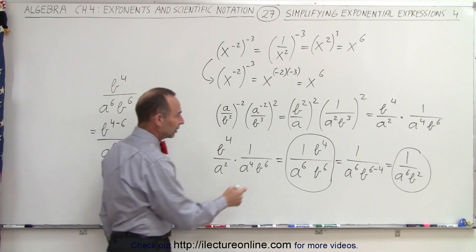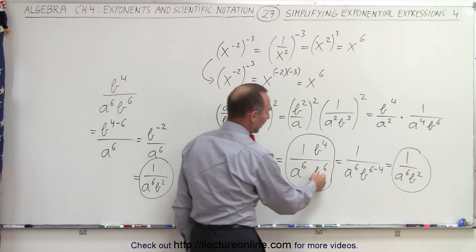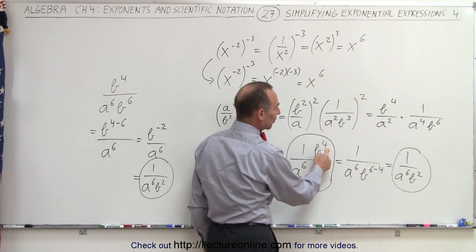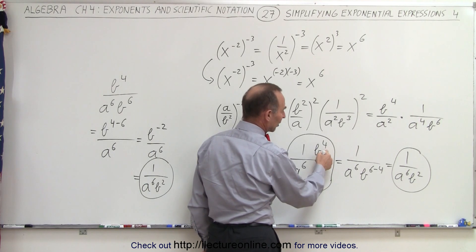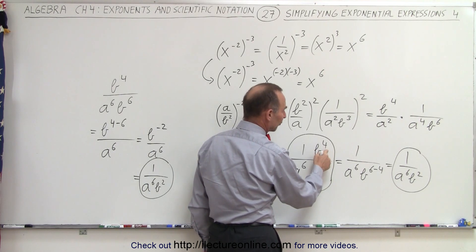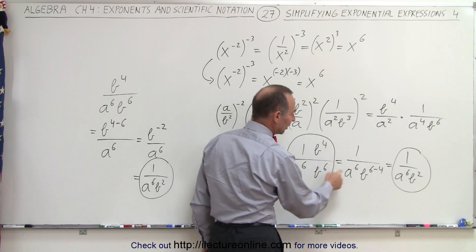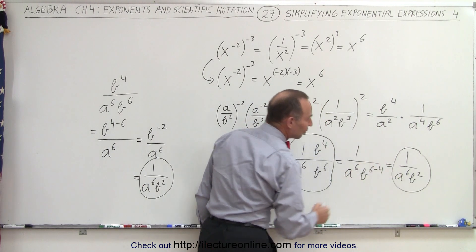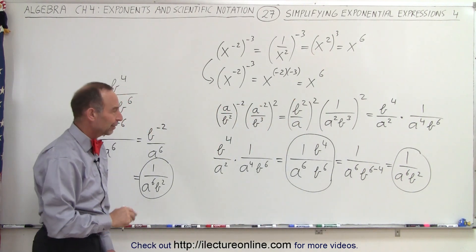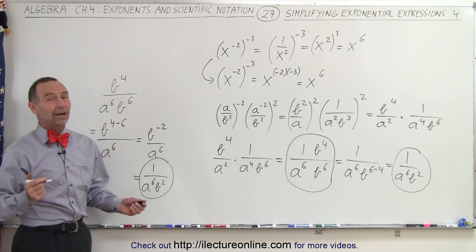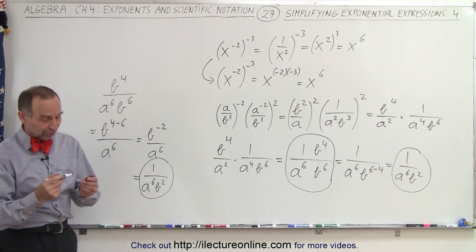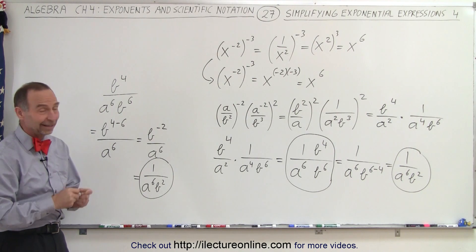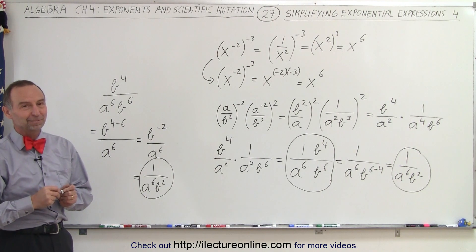So sometimes you can look at this and think: I'm going to end up with a negative exponent anyway and then have to bring it down. So why not bring the b to the 4th power down, make it negative, and get there a little bit quicker. But either way works just fine — you end up with the same result, and that is how it's done.